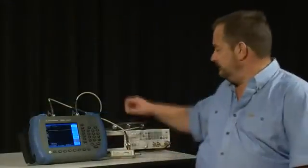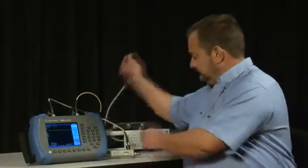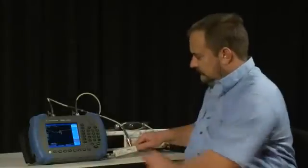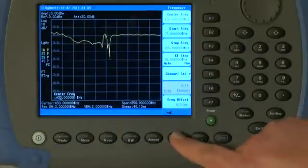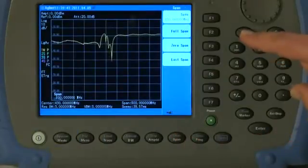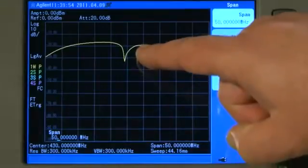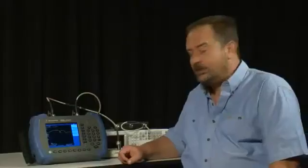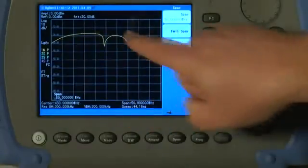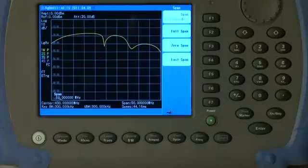Now if I connect the filter, and press Span, and we will zoom in a bit, you can see here the return loss of the filter. But of course we have not yet normalized the trace, so the values on here are relatively meaningless until we do that.